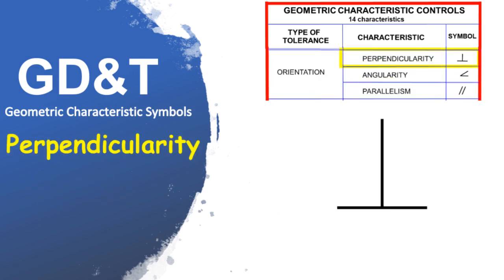Perpendicularity is 90 degrees to a datum. It can be called out two different ways: surface perpendicularity, which controls perpendicularity between two 90-degree surfaces, and axis perpendicularity, which defines how perpendicular a specific axis needs to be to a datum. Perpendicularity will likely have an MMC or LMC callout if used in a production environment.